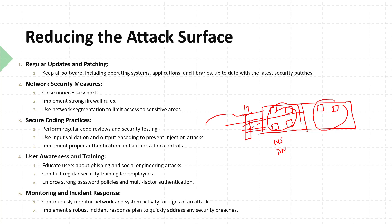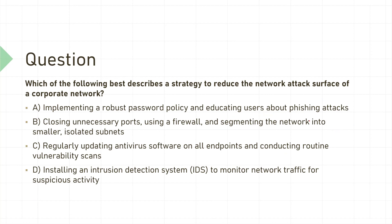Quiz question 1: Which best describes a strategy to reduce the network attack surface of a corporate network? Option A — implement a robust password policy and educate users about phishing — is more of a directive control. Option C — updating antivirus and vulnerability scans — is more endpoint security. Option D — installing IDS — makes sense but is part of B. The answer is B: closing unnecessary ports with a firewall and segmenting the network into smaller, isolated subnets.